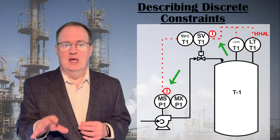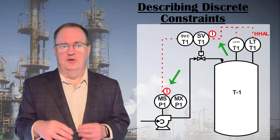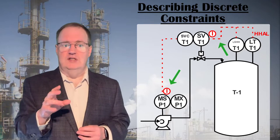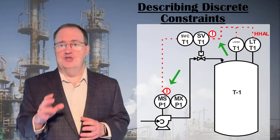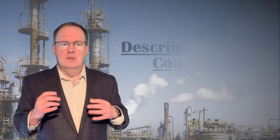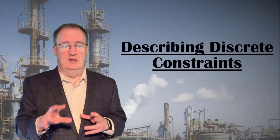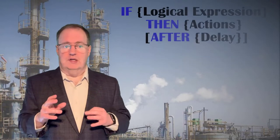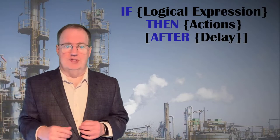A circled eye on a P&ID indicates an interlock, which we'll define later. Even without the circled eye, which is not a universal standard for P&IDs, a dotted line connecting a sensor to a discrete device like a block valve or a motor starter should be understood to indicate a discrete constraint when we see it on a P&ID. Beyond dotted lines on P&IDs, which are limited in what they can describe, how do we define discrete constraints?